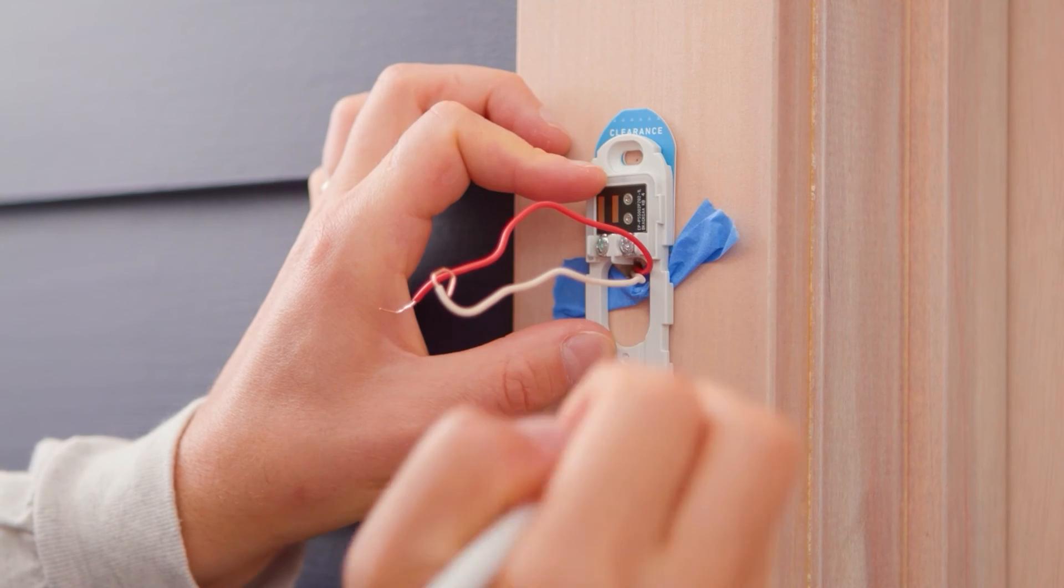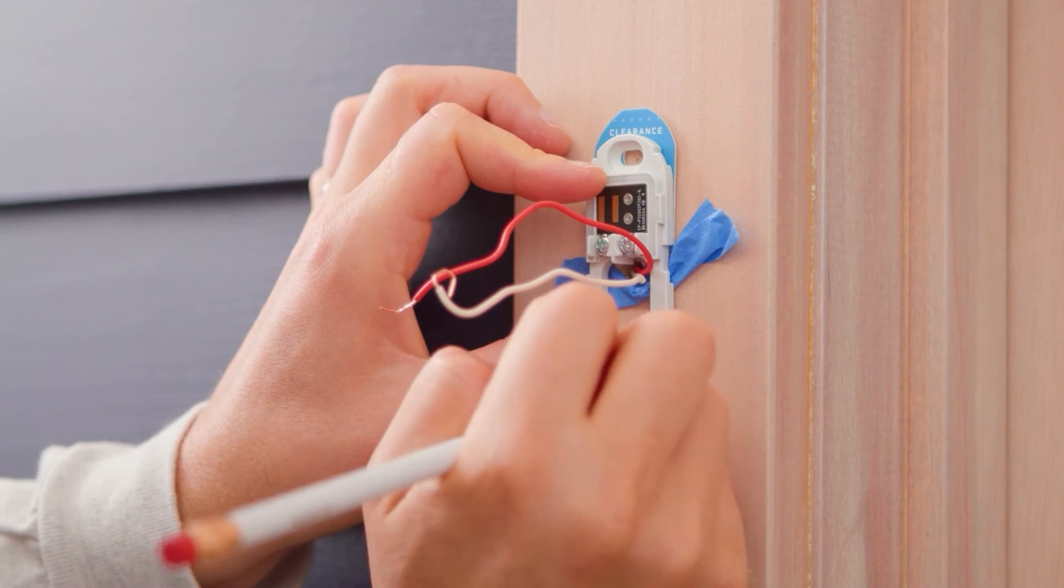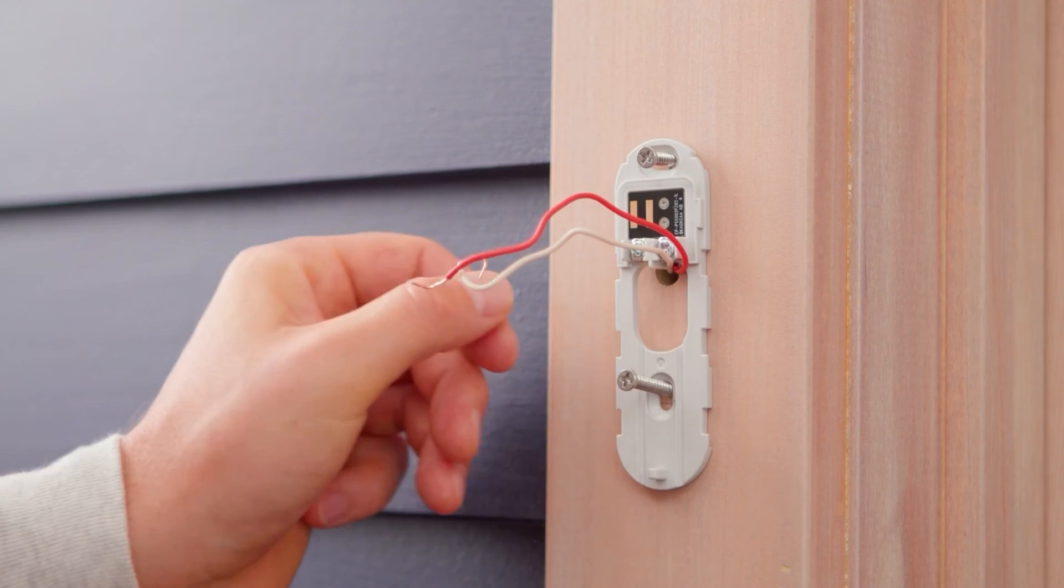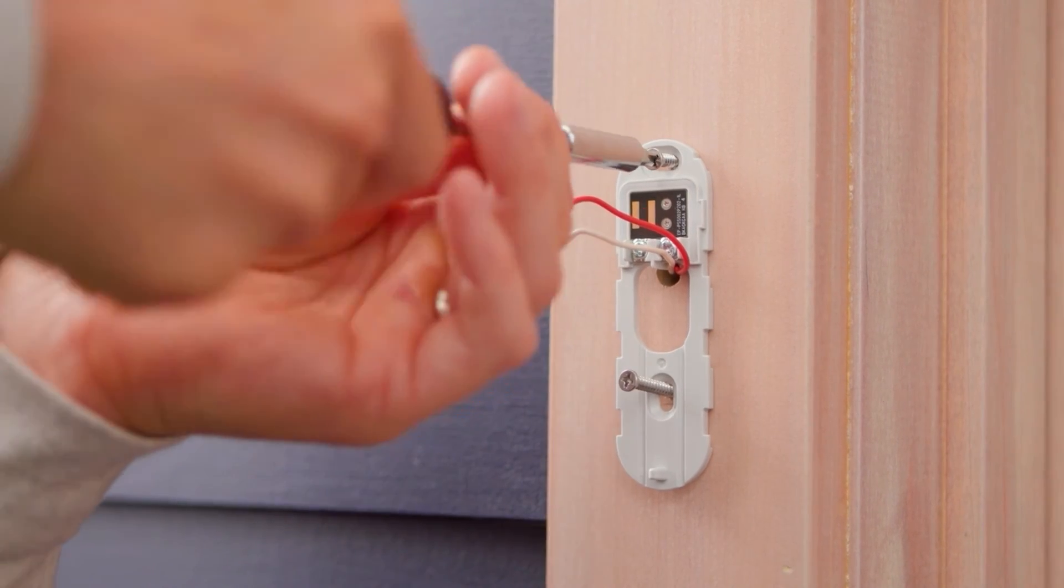If you do not need to use anchors, just mark where you want to drill your holes. Then remove the cardboard clearance marker and use the included 1 inch screws to attach the bracket to the wall.